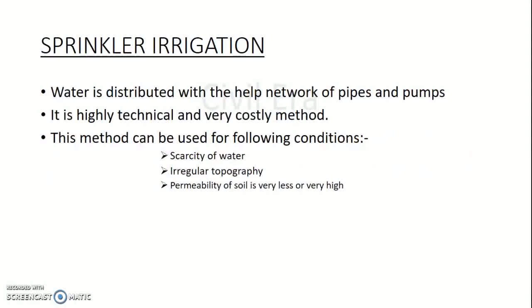Our next method is sprinkler irrigation. In this method water is distributed with the help of a network of pipes and pumps. It is a highly technical and very costly method, therefore not commonly used in India. This method can be used where there is scarcity of water, irregular topography, and where permeability of soil is very less or very high.